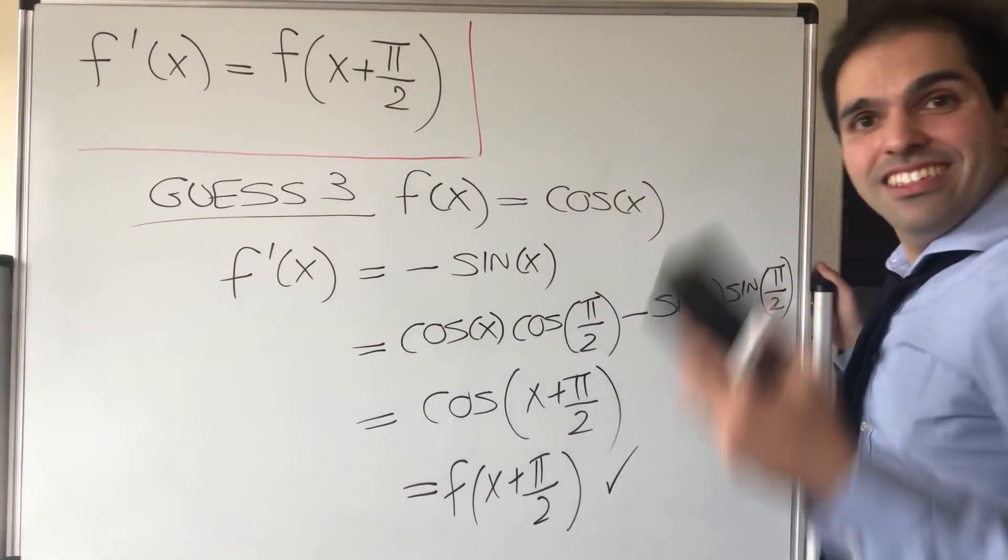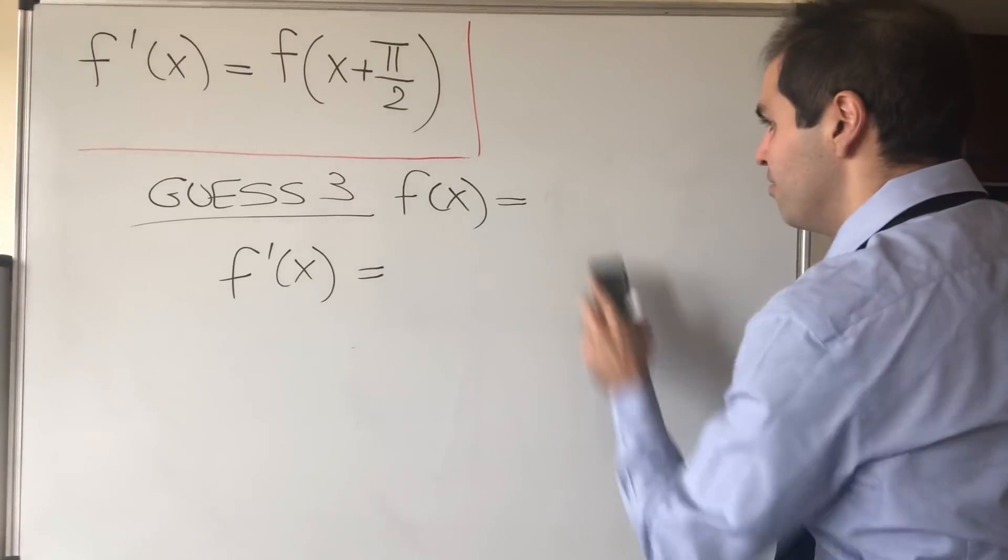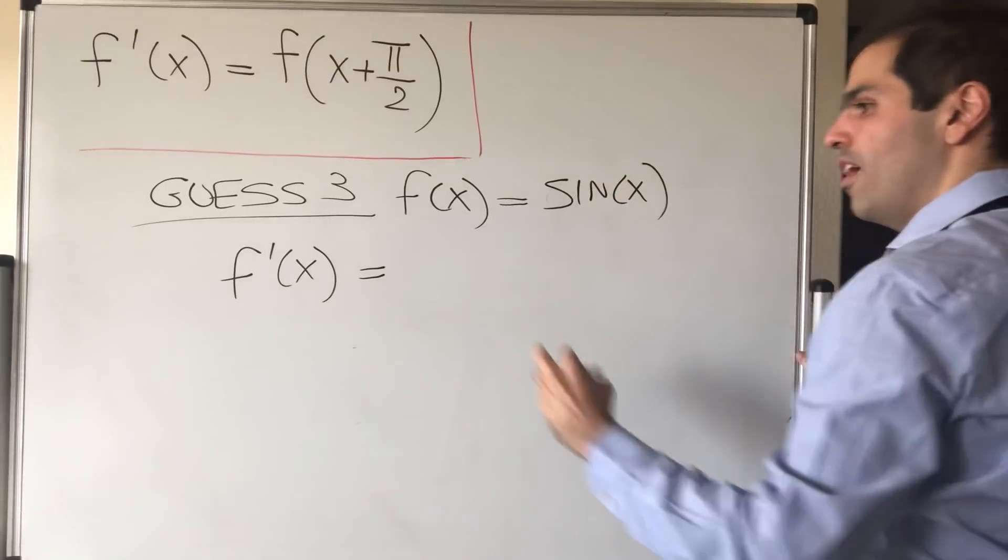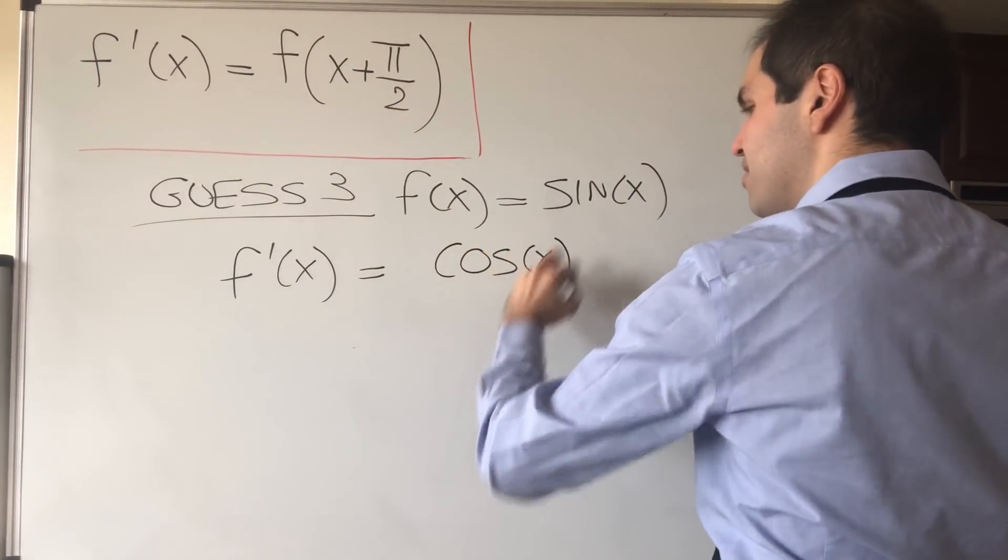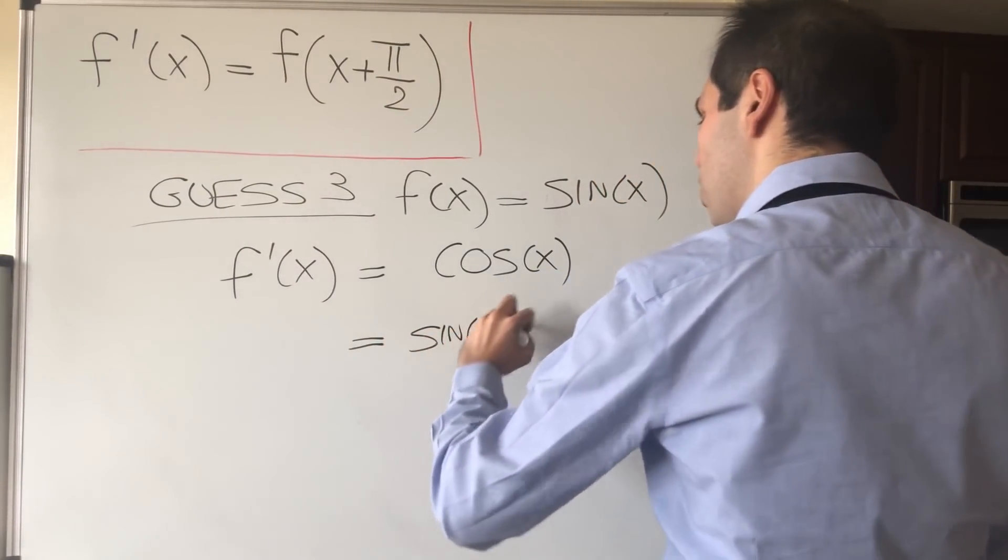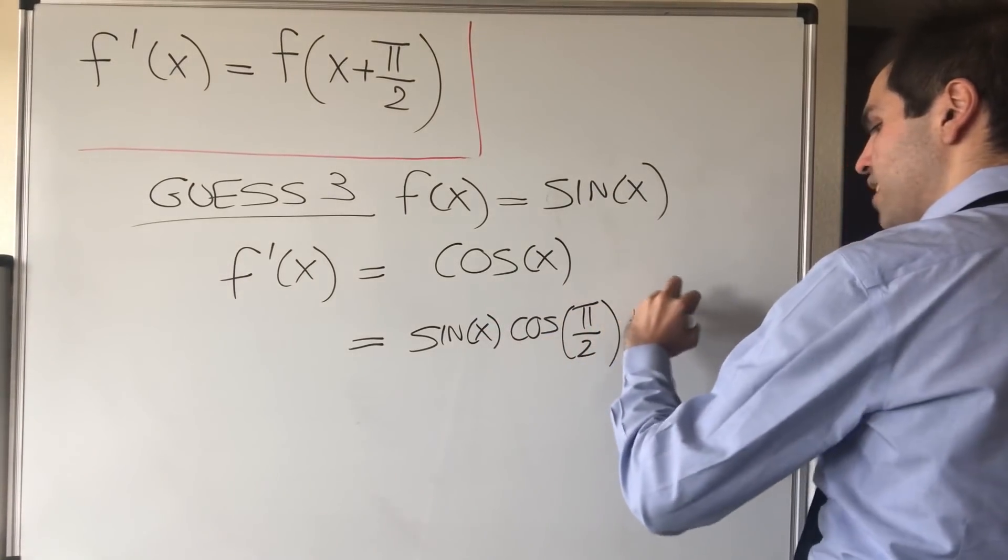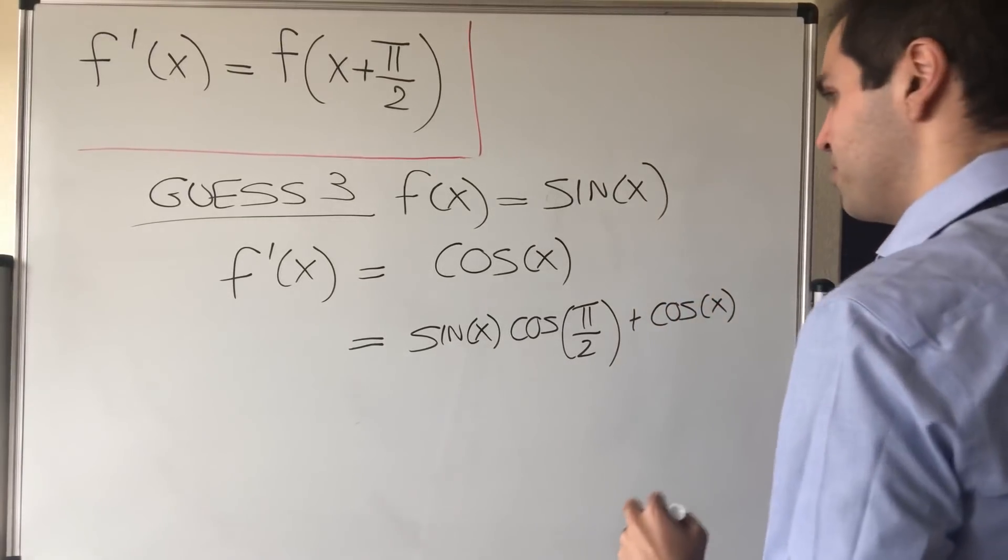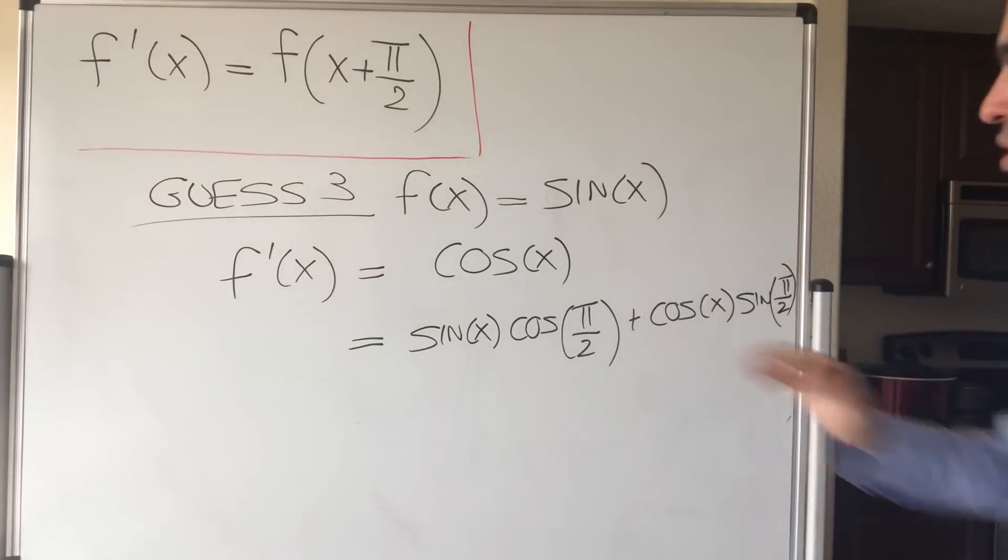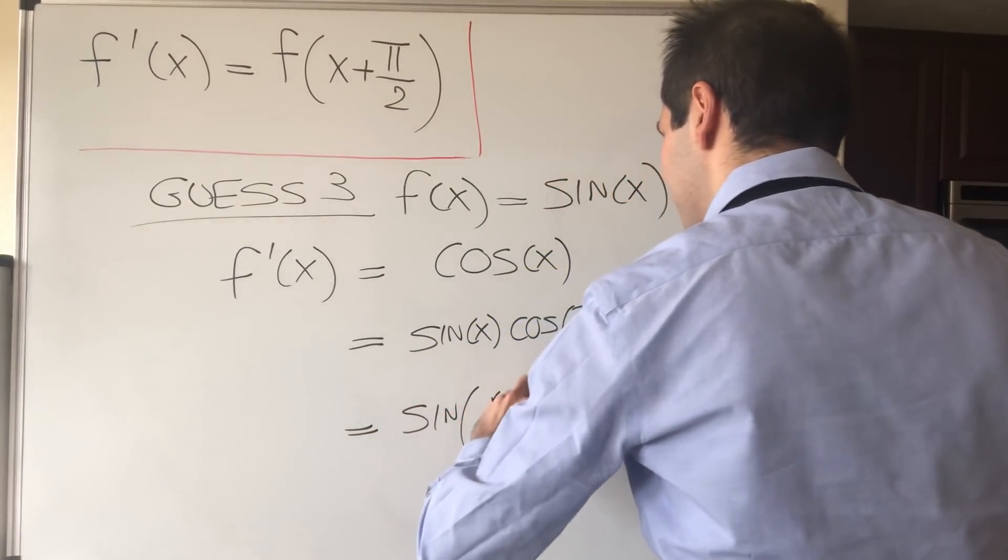And in fact, since this was so fun, let's also try it with sine. Well, let's try f(x) equals sin(x). Well f' is cos(x). But notice that is the same thing as sin(x)cos(π/2) + cos(x)sin(π/2). Because this is one, this is zero, and then by the sum law for sines, that is sin(x+π/2).